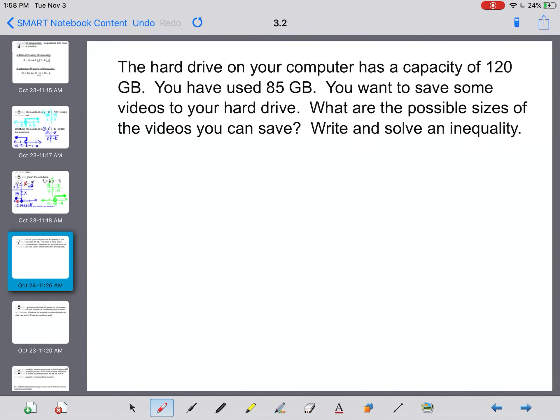Okay, here we go with our word problems or our real-life situations. This one says the hard drive on your computer has a capacity of 120 gigabytes. You have used 85 gigabytes. You want to save some videos to your hard drive. What are the possible sizes of the videos you can save? Write and solve an inequality. Alright, so first thing, we've got to figure out what these numbers are. This has a total capacity of 120 gigabytes. So 120 is my total. That means it's on one side of my inequality. We have used 85, and we want to know what we have left.